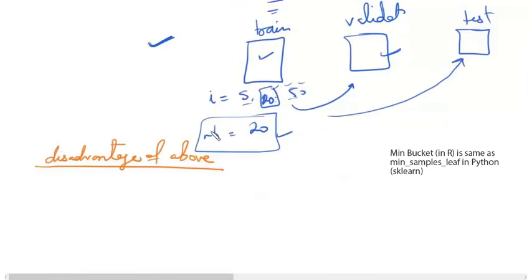In the previous video, we saw that to prevent overfitting in case of a decision tree model, the best approach and the intuitive approach which looks correct is to divide your data into three components: train, validation, and test.